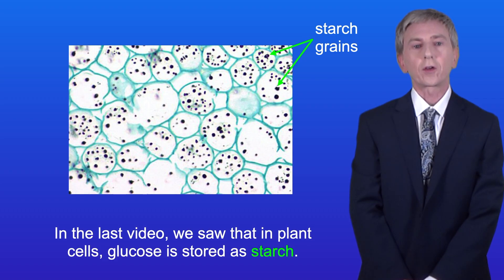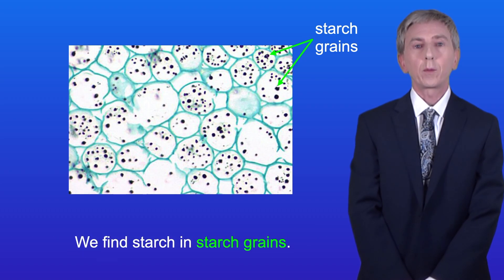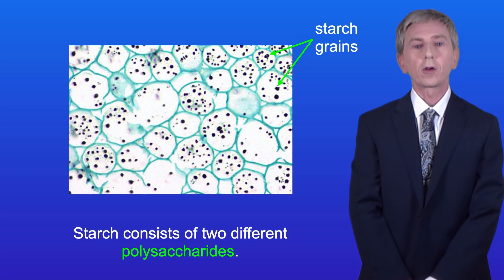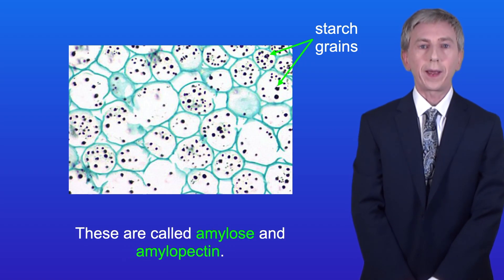In the last video we saw that in plant cells, glucose is stored as starch, and we find starch in starch grains. Starch consists of two different polysaccharides. These are called amylose and amylopectin.